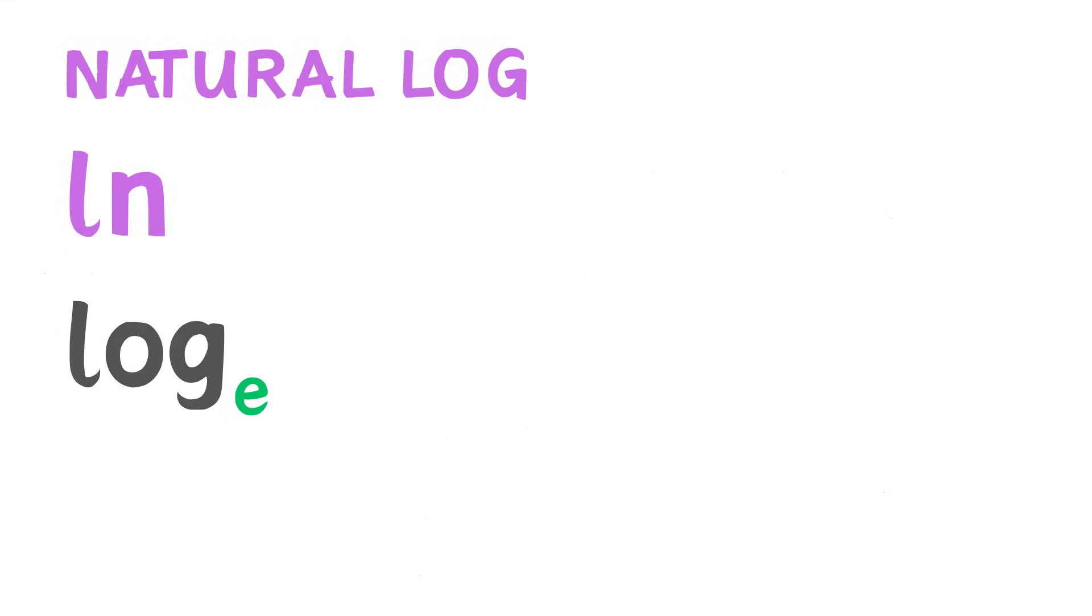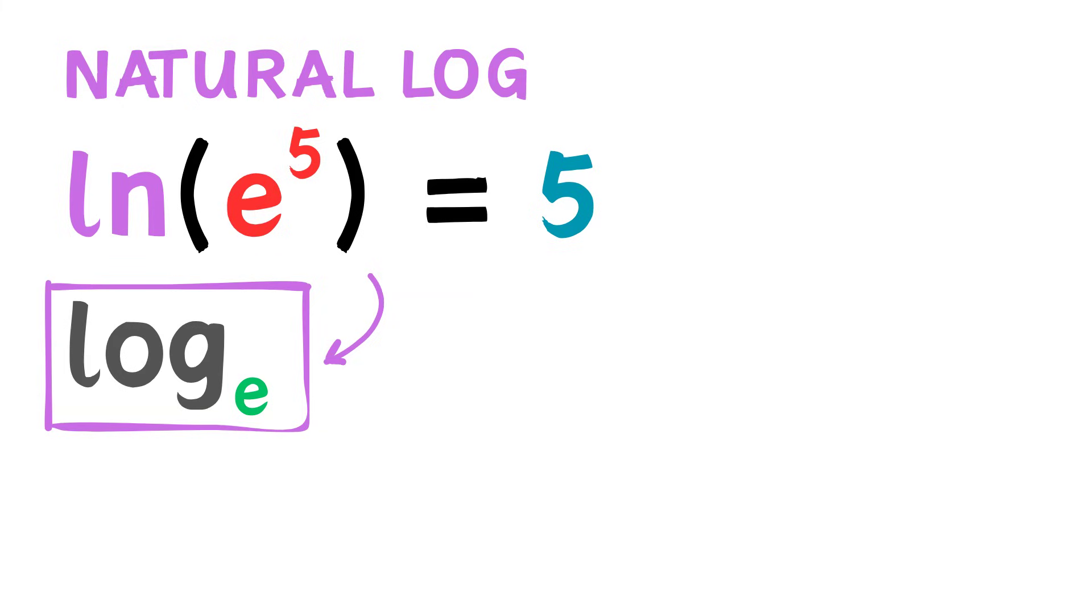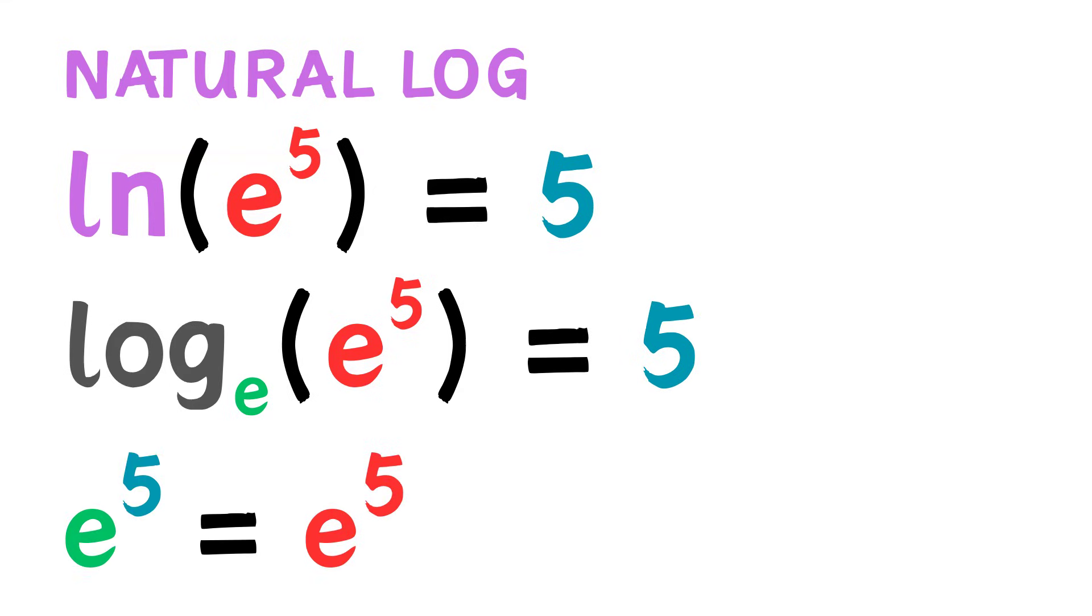The natural log works just like other logarithms. If we take the natural log of e to the power of 5, we know that the answer is just 5. To make things clearer, you could rewrite the ln as the log with a base of E. Obviously, E must have an exponent of 5 to make E to the power of 5.